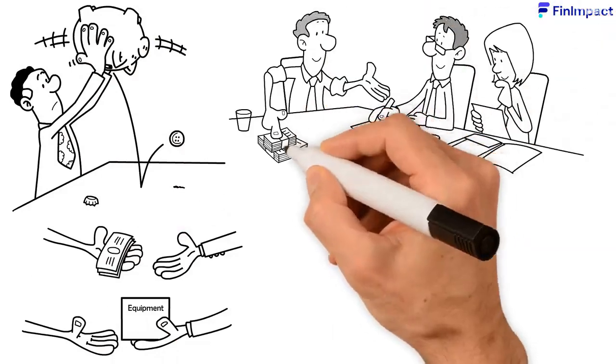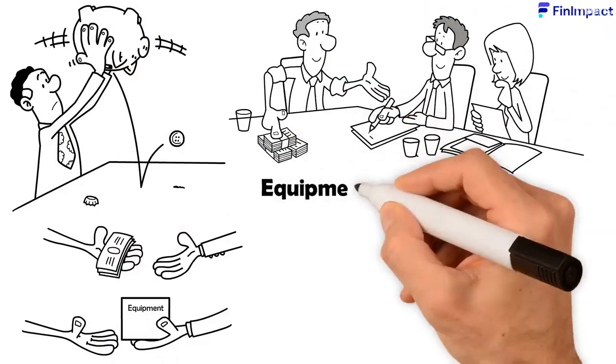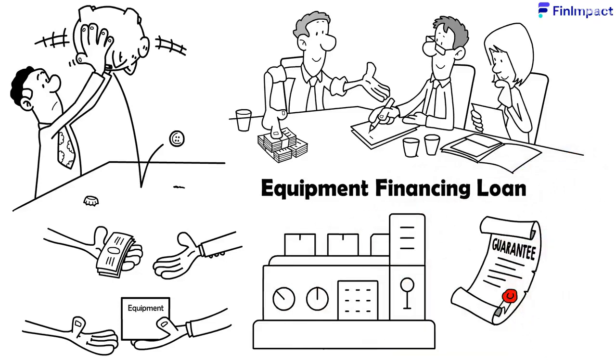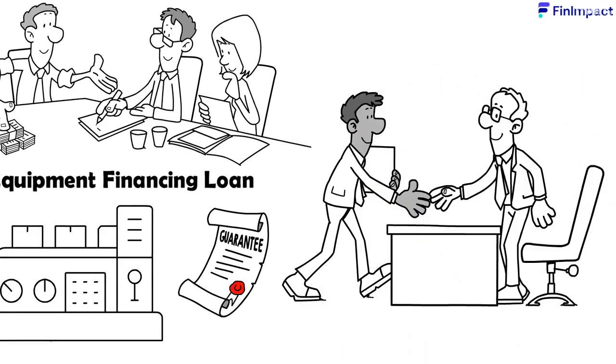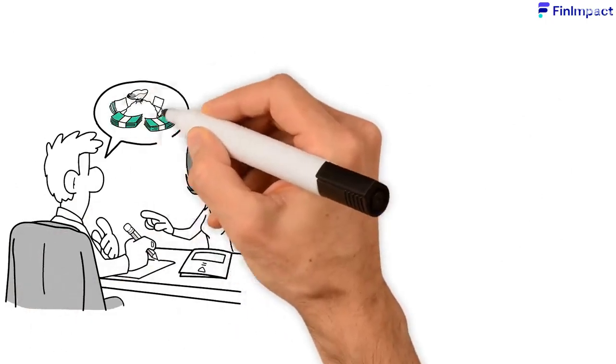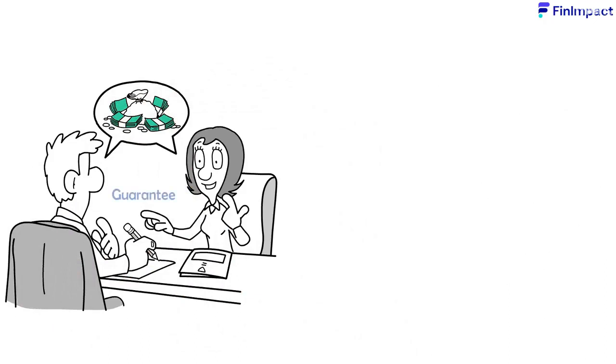Lenders will offer an equipment financing loan using the equipment as the guarantee, allowing you to get your business off the ground and started. A traditional loan requires the borrower to provide a certain amount of money upfront to the lender as a guarantee in case you cannot repay the money.